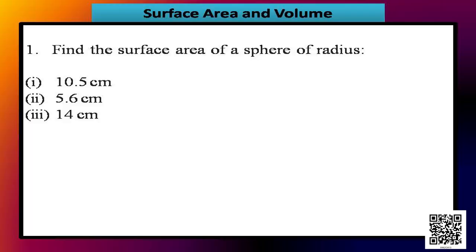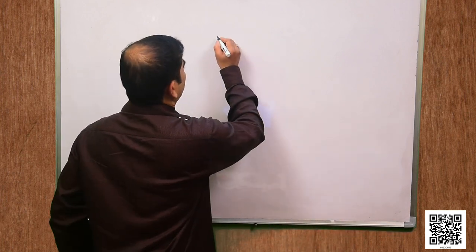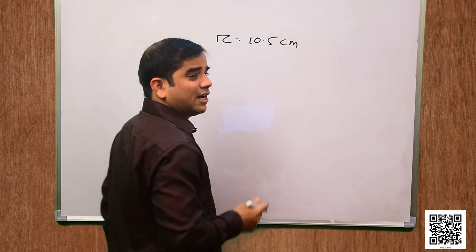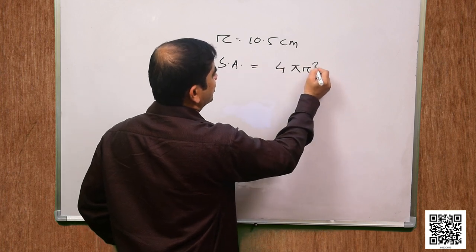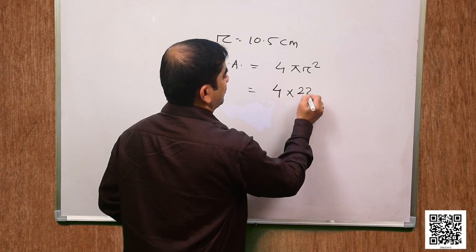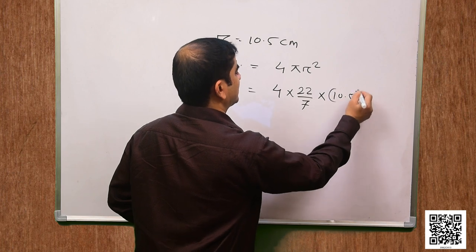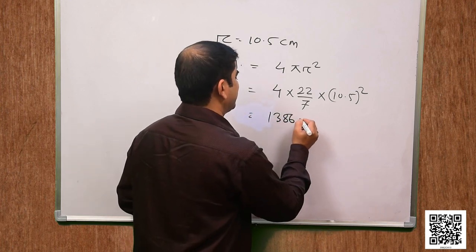It says assume pi is equal to 22 by 7, and question 1 says find the surface area of a sphere of radius 10.5 cm, 5.6 cm and 14 cm. So three radii are given. Let us begin with the first one: radius is 10.5 cm. We know surface area of a sphere is 4 pi r squared. Replacing the values: 4 into 22 by 7 into 10.5 squared gives us 1386 cm squared.